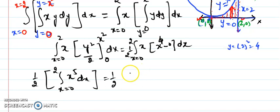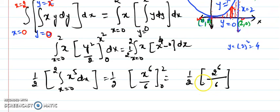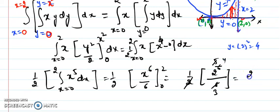The integration of x⁵ is x⁶/6, evaluated from 0 to 2. Substituting the limits: (1/2) · (2⁶/6) = (1/2) · (64/6) = 64/12 = 16/3. So the answer for the first example over the non-rectangular region is 16/3.